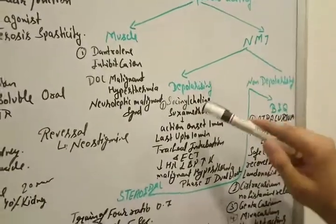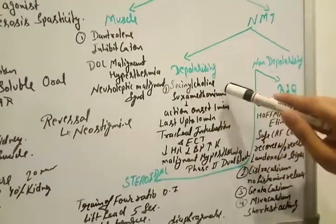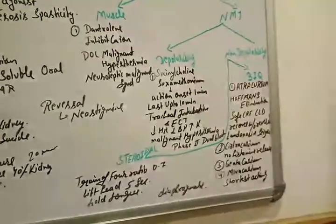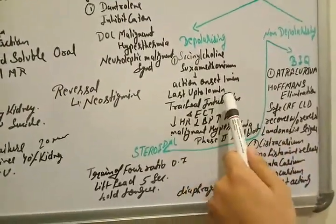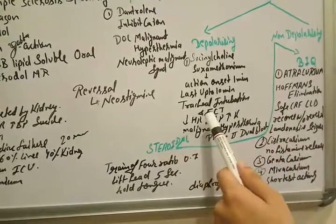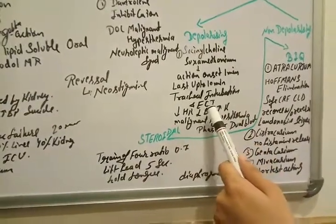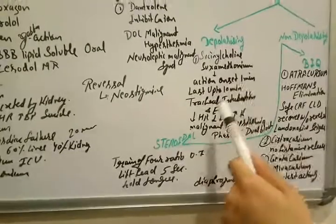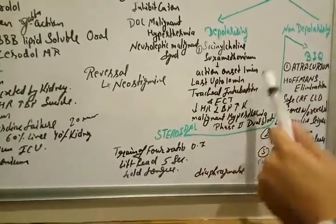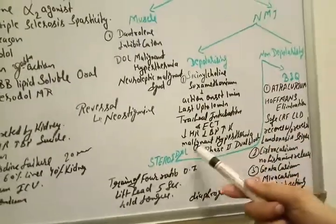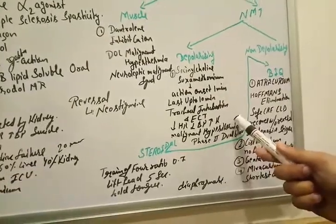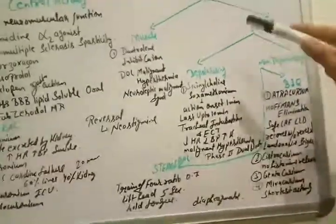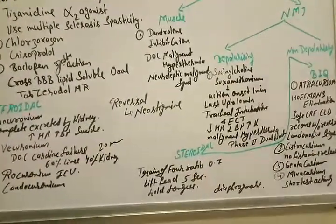Peripherally acting muscle relaxant. So depolarizing is succinylcholine or we can say suxamethonium. Its onset is 1 minute and lasts up to 10 minutes. We are going to use in tracheal intubation and ECT. ECT is electroconvulsive therapy. It decreases the heart rate, decreases the blood pressure and increases the potassium. It causes malignant hyperthermia and phase 2 reaction and dual block due to succinylcholine.